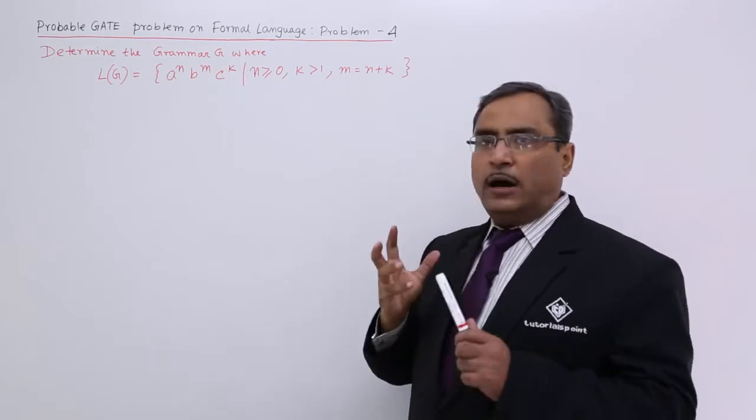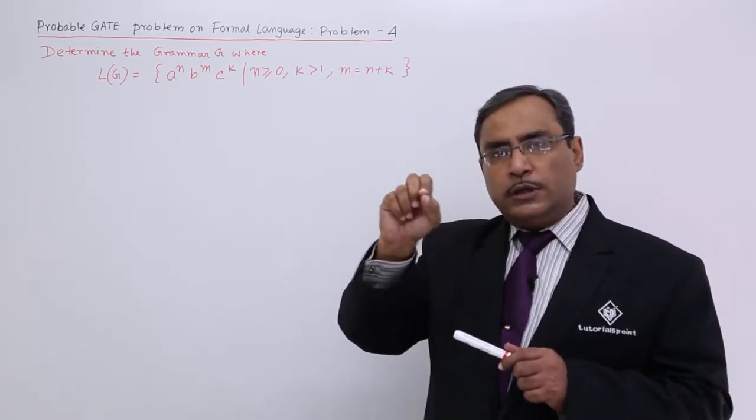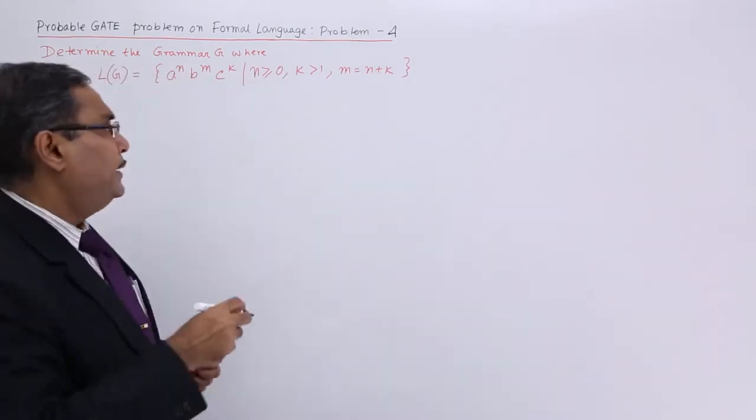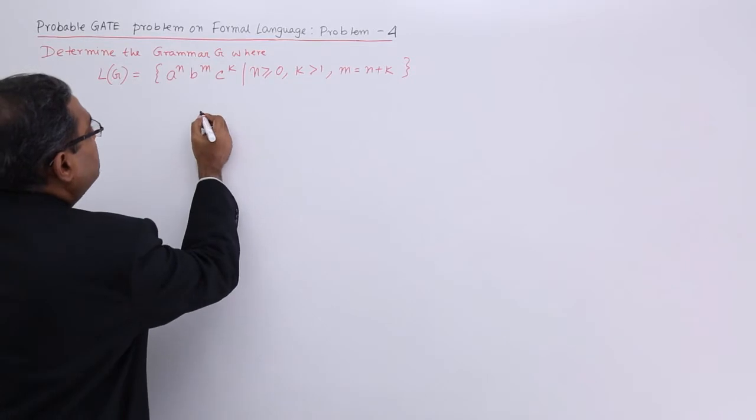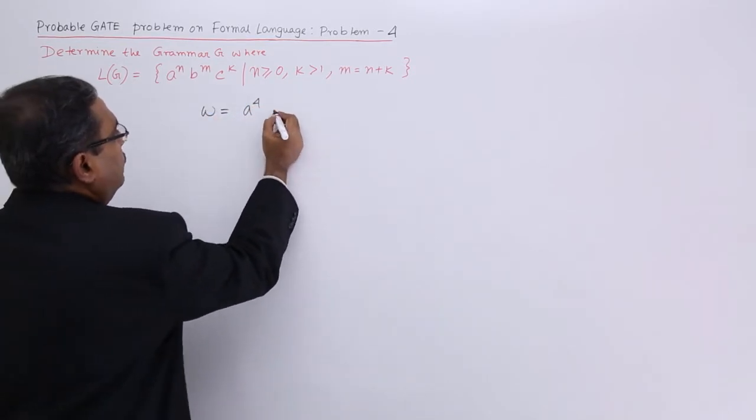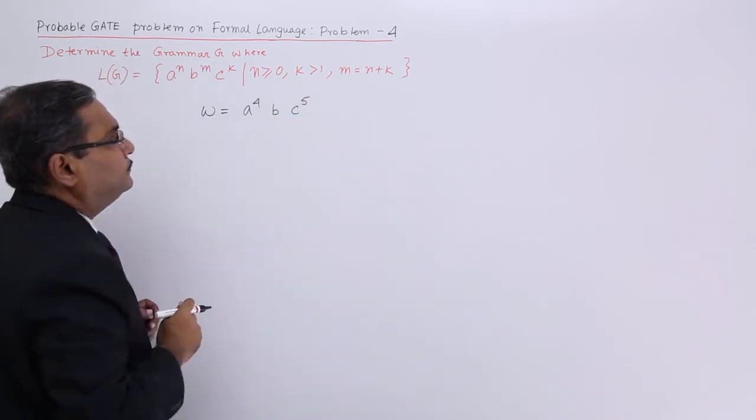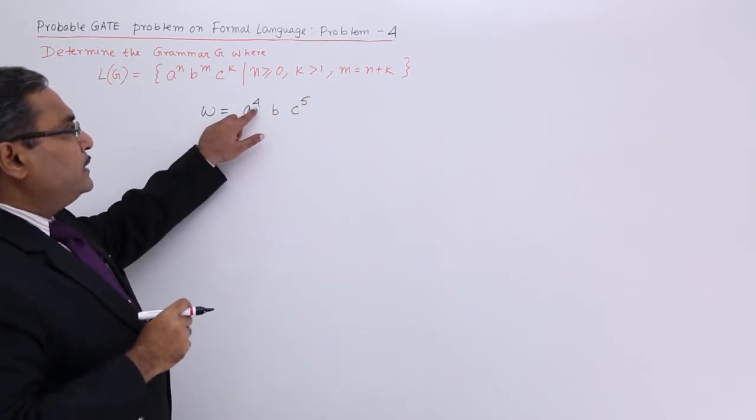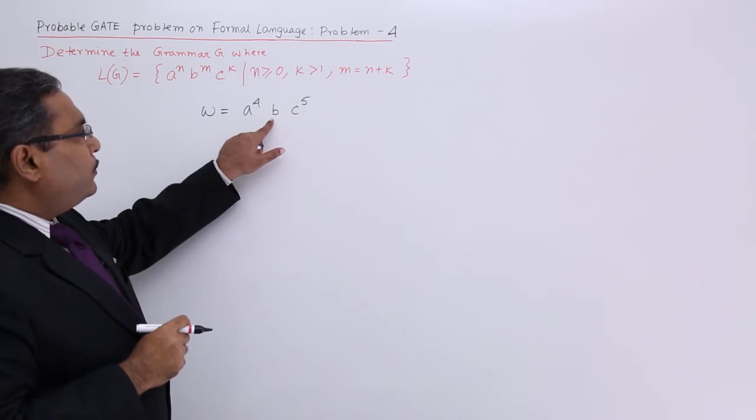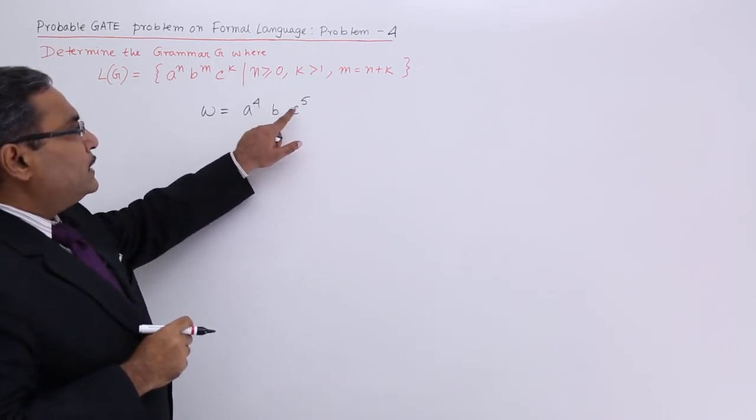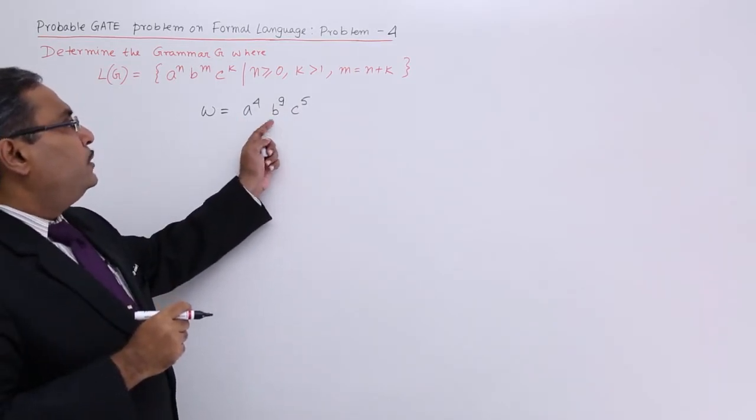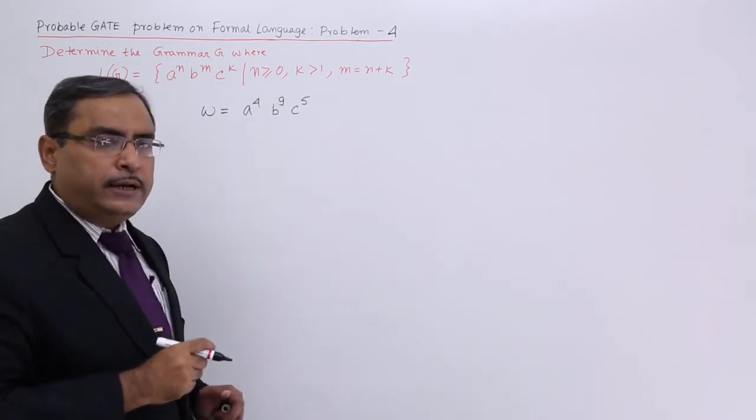Whenever you are not getting how to approach, at first you write one word in accordance with this particular grammar. I am writing the same for you. We are having say one word I am considering as a^4, b^9, and then c^5. Let me check: 4 is greater than or equal to 0 is ok, and 5 is greater than 1 is ok. Now, what about b? b will be n plus k. So how many? 9. So this is the word, this is the sentence which is in accordance with this particular grammar.